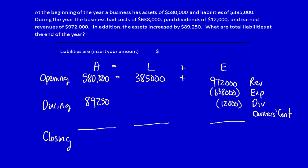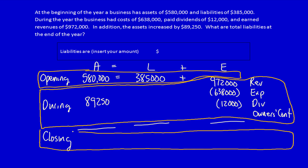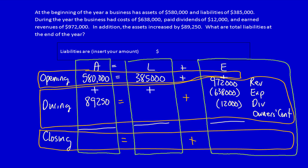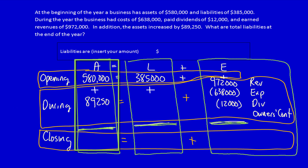What are total liabilities at the end of the year? We have a number of different ways to solve this. We can take each row or column separately — either way, it makes no difference, because this line is the same as an equal sign. Taking the assets row: $580,000 plus $89,250 is equal to $669,250.